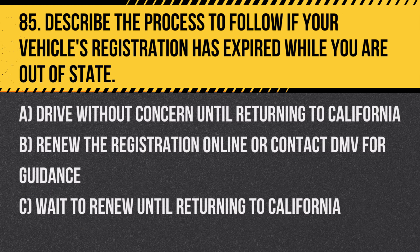Question 85: Describe the process to follow if your vehicle's registration has expired while you are out of state. A. Drive without concern until returning to California. B. Renew the registration online or contact DMV for guidance. C. Wait to renew until returning to California. Answer: B. Renew the registration online or contact DMV for guidance. This prevents any legal issues while the vehicle is out of state.